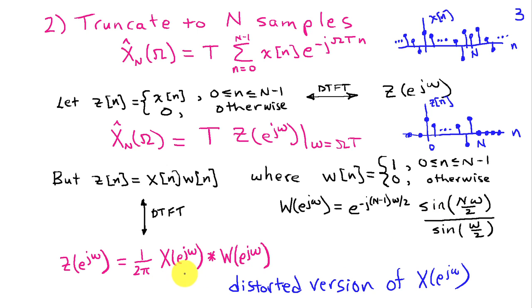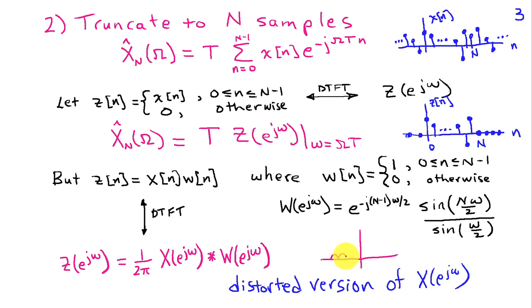We'll analyze the effect of this convolution in more detail in another lecture. For now, convolving X with the sinc function will distort X of e to the j omega. If W were an impulse, the convolution wouldn't change X of e to j omega — but it's not an impulse. Sketching the magnitude, it has a main lobe and side lobes. This will blur out details, and the side lobes will reduce our dynamic range in the spectrum.